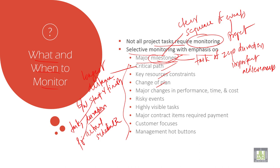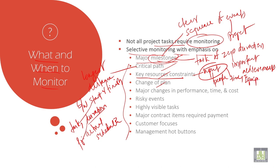Then resource constraints — key resource constraints. They are defined as the limitations of input available to complete a particular job, primarily people, equipment, and supplies. So it talks about the input like people, time, equipment, and supplies.